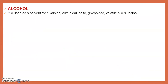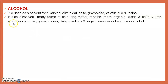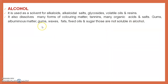Alcohol is used as a solvent for alkaloids, alkaloidal salts, glycosides, volatile oils, and resins. It also dissolves many coloring matters, tannins, many organic acids, salts, gums, and albuminous matter. However, gums, waxes, fats, fixed oils, and sugars are not soluble in alcohol, though some waxes and fats are soluble most of the time.